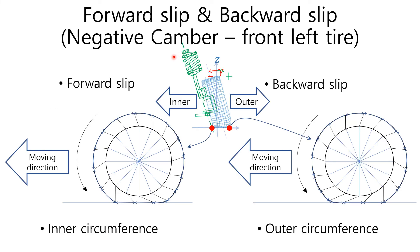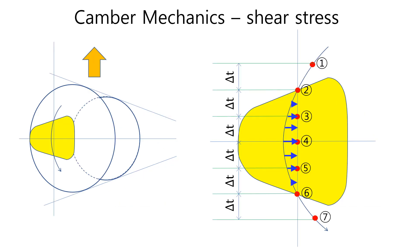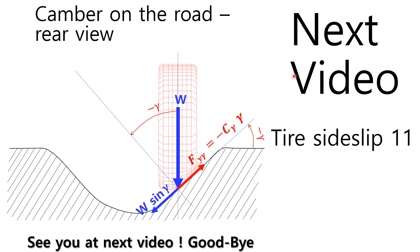If you watch the previous videos, you can easily understand upcoming videos. I explain the forward slip and the backward slip for the negative camber. Recently, I explained the mechanism producing the camber thrust. The next video will be tire side slip part 11, where I will explain camber on the road. You can catch the brand new video by subscribing. So what are you waiting for? See you at the next video.